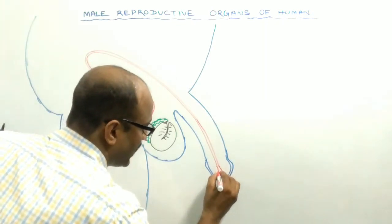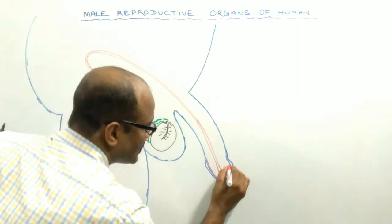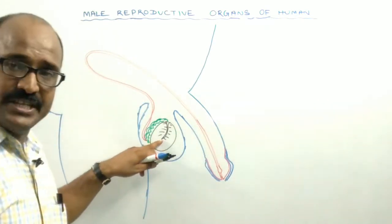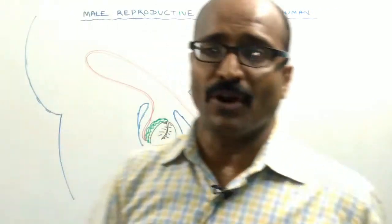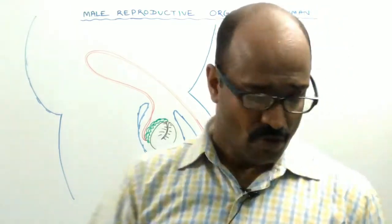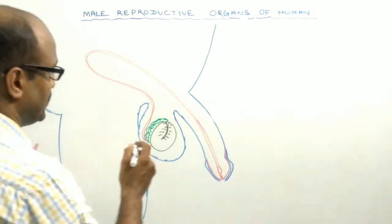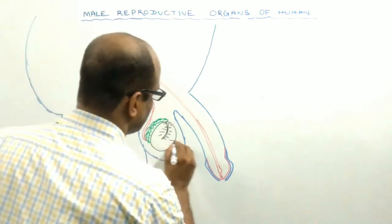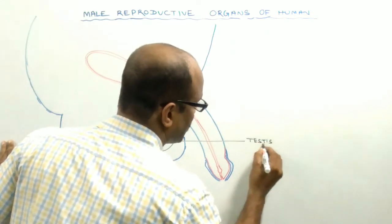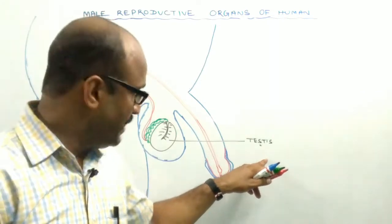In case of human, the primary reproductive organ is the testis. The secondary reproductive organs are several in number, and I will go through them one by one. This is the testis — this is the primary reproductive organ of the male.